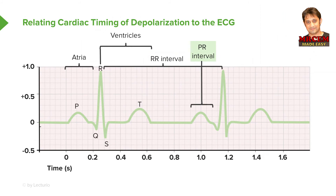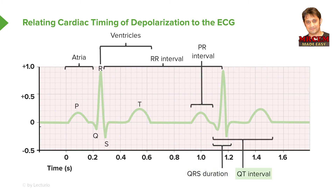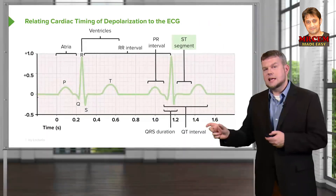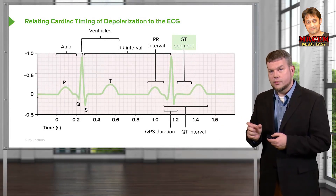The PR interval goes from the beginning of the P wave to the beginning of the QRS complex and needs to be a certain duration — if it's longer, you might have an AV block. The QRS also has a certain duration; if it's too wide, you're concerned about things like premature ventricular complexes. The QT interval is very dependent upon heart rate — how often you have depolarization versus how often it repolarizes. The ST segment should be isoelectric, meaning a flat line, matching the flat line after the T wave and before the P wave.